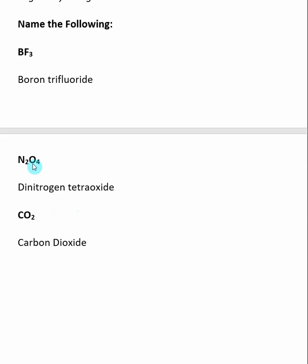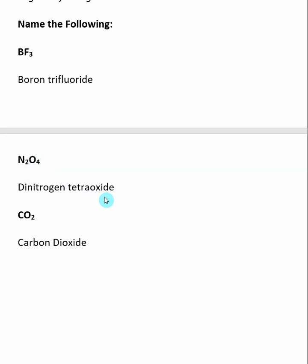Here we have nitrogen and oxygen. You start with the prefix for the element on the left — there's two nitrogens, so the prefix would be di — then the full name of the element on the left, which is nitrogen, then the prefix for the element on the right. There are four oxygens, so you're going to get tetra, then the first syllable of the element on the right, which would be ox, and then you end with ide. So this compound would be named dinitrogen tetraoxide.